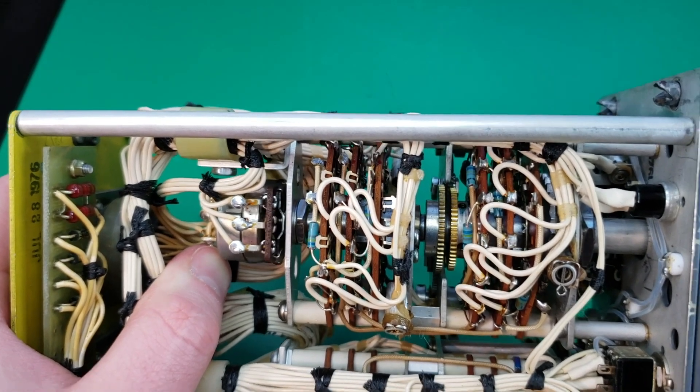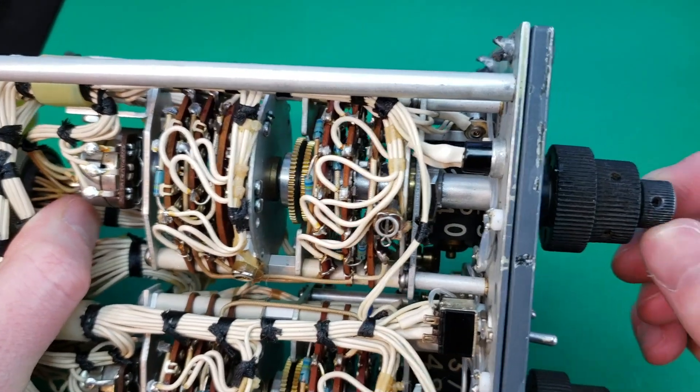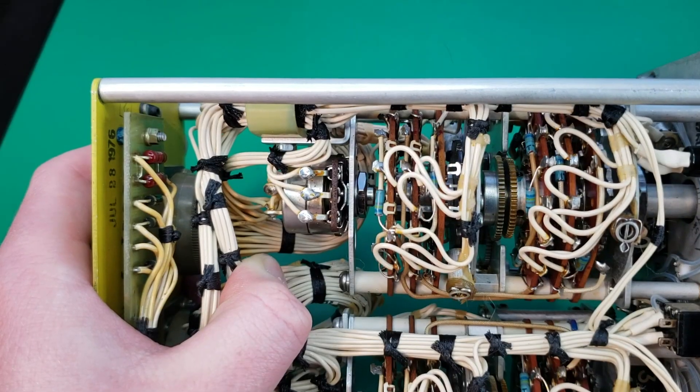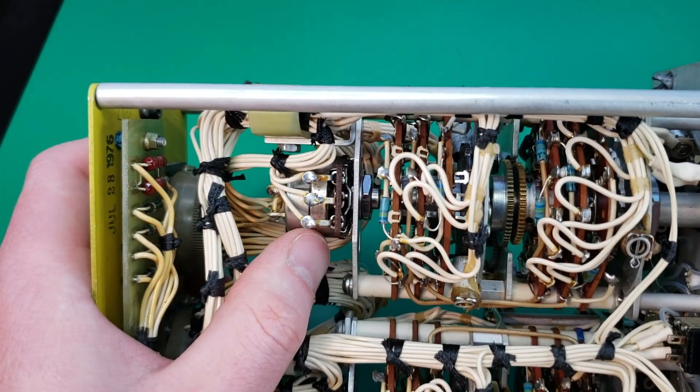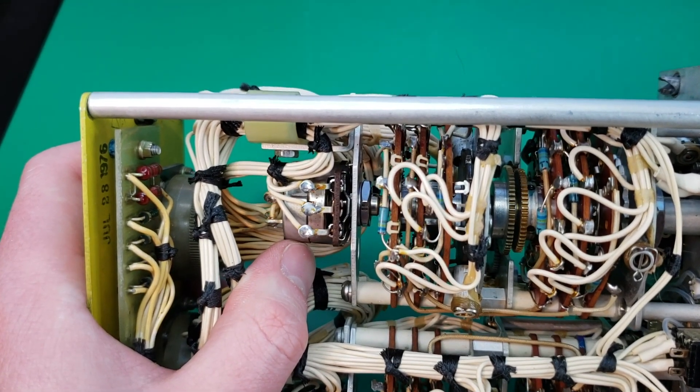Back here, we have a potentiometer, which goes to this smallest knob here. You can see it rotating. This potentiometer also has a switch inside of it, so you can hear it clicking.